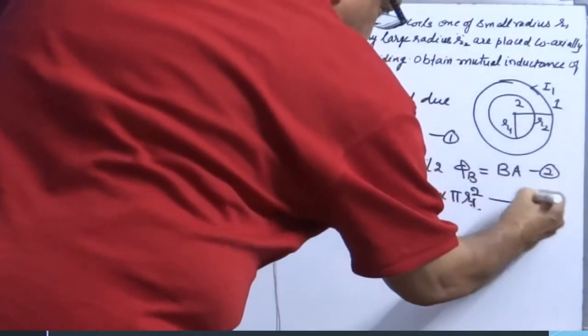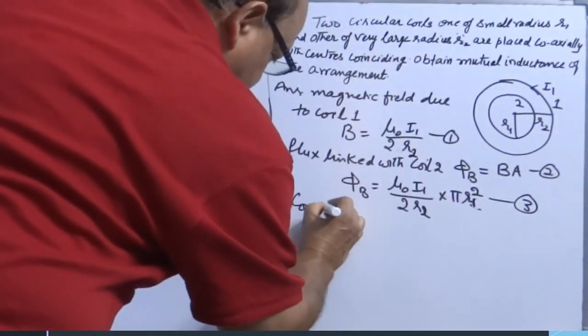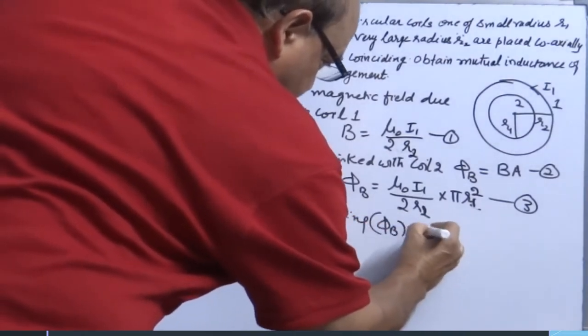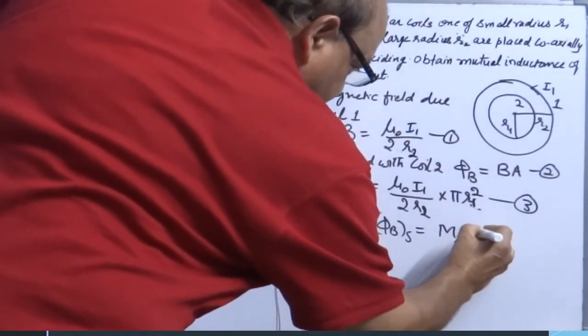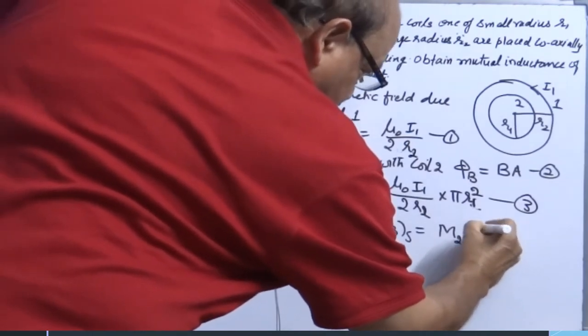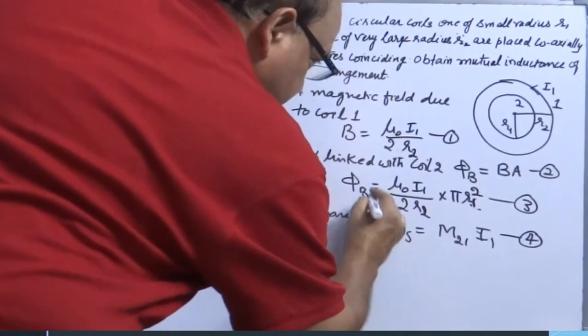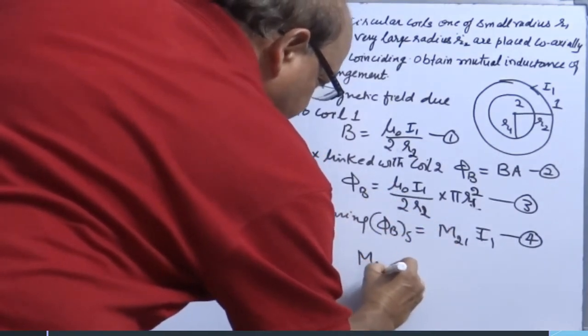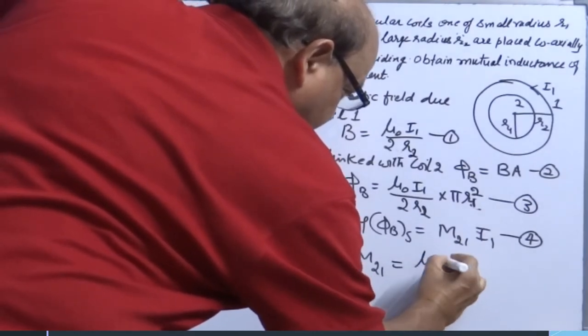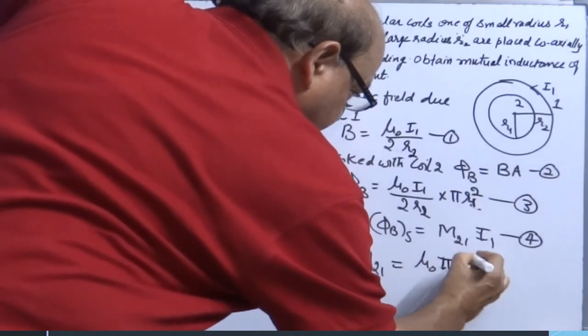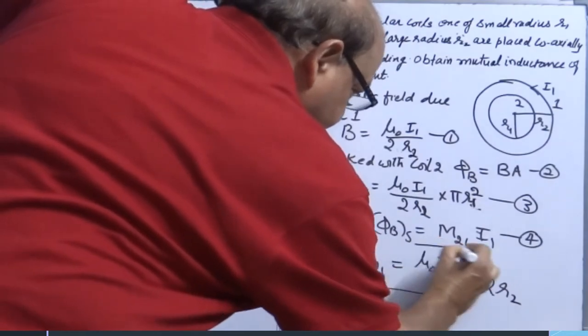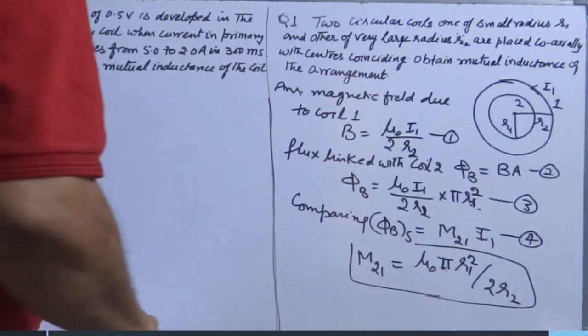Compare the result with mutual inductance. Phi B equals M21 into I1. Comparing equations 3 and 4, M21 equals mu naught pi R1 square divided by 2R2. So that will be the answer.